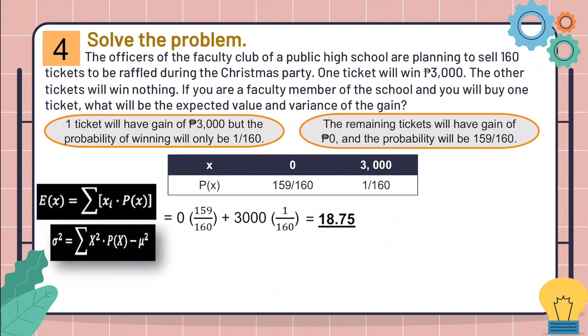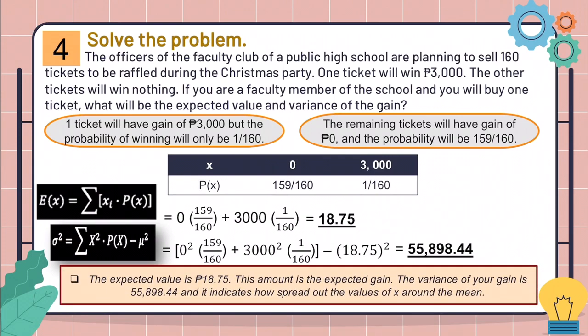Then, let's get the variance of your gain. Quantity 0 squared times 159 over 160 plus 3,000 squared times 1 over 160, then subtract it to 18.75 squared and we will get 55,898.44. This only means that the expected value is 18.75. This amount is the expected gain. The variance of your gain is 55,898.44 and it indicates how spread out the values of X are around the mean.